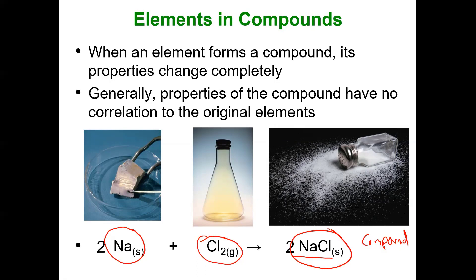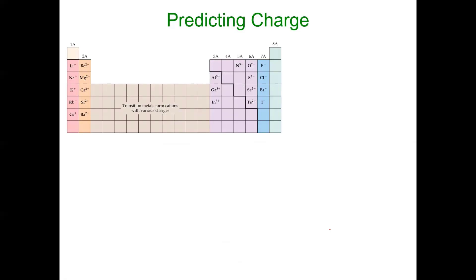We got to balance it, but that's a whole other section. This is focusing on naming. So we've already talked about predicting charges. We're going to use our periodic table. The metals, which are on the left side of the staircase, form the cations because they have fewer valence electrons. The non-metals are closer to the noble gases. So they need to gain fewer electrons. When they gain electrons, they're negatively charged.